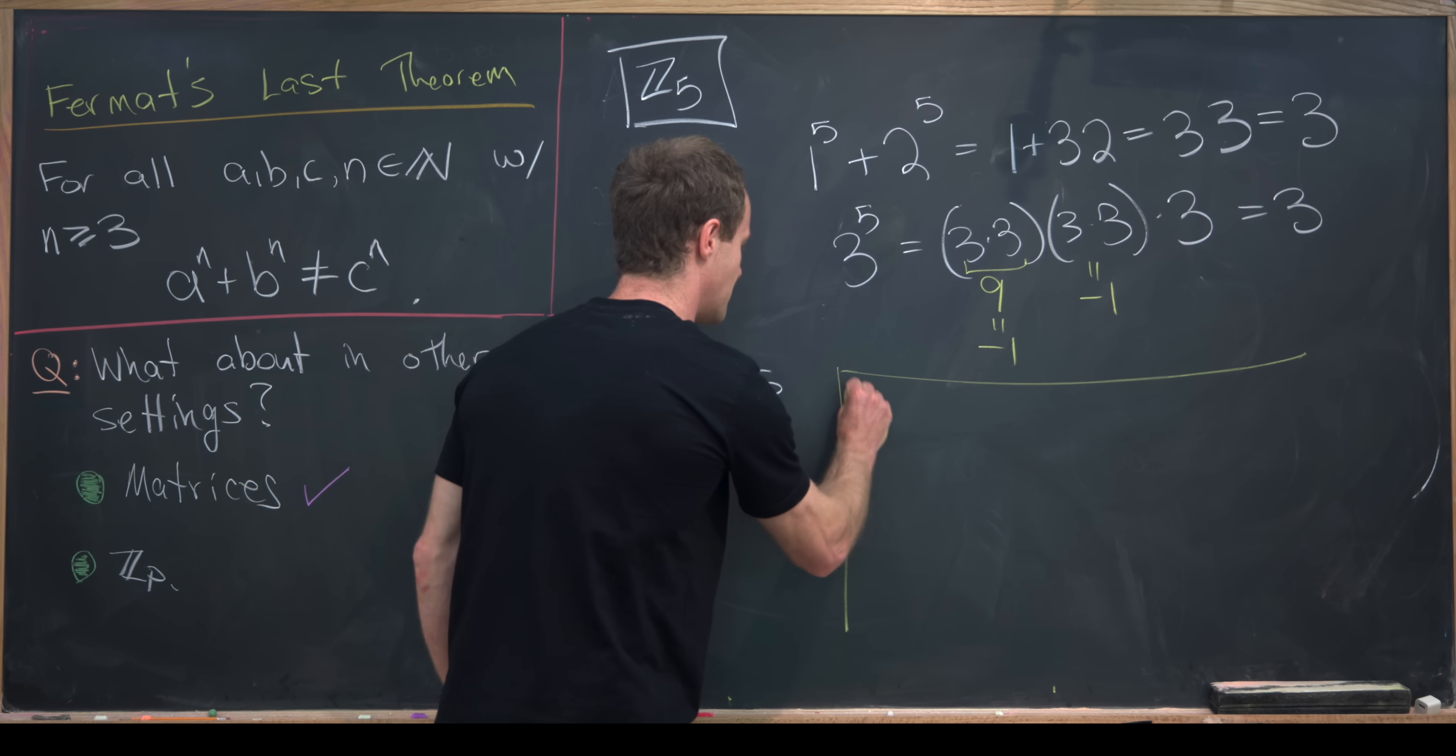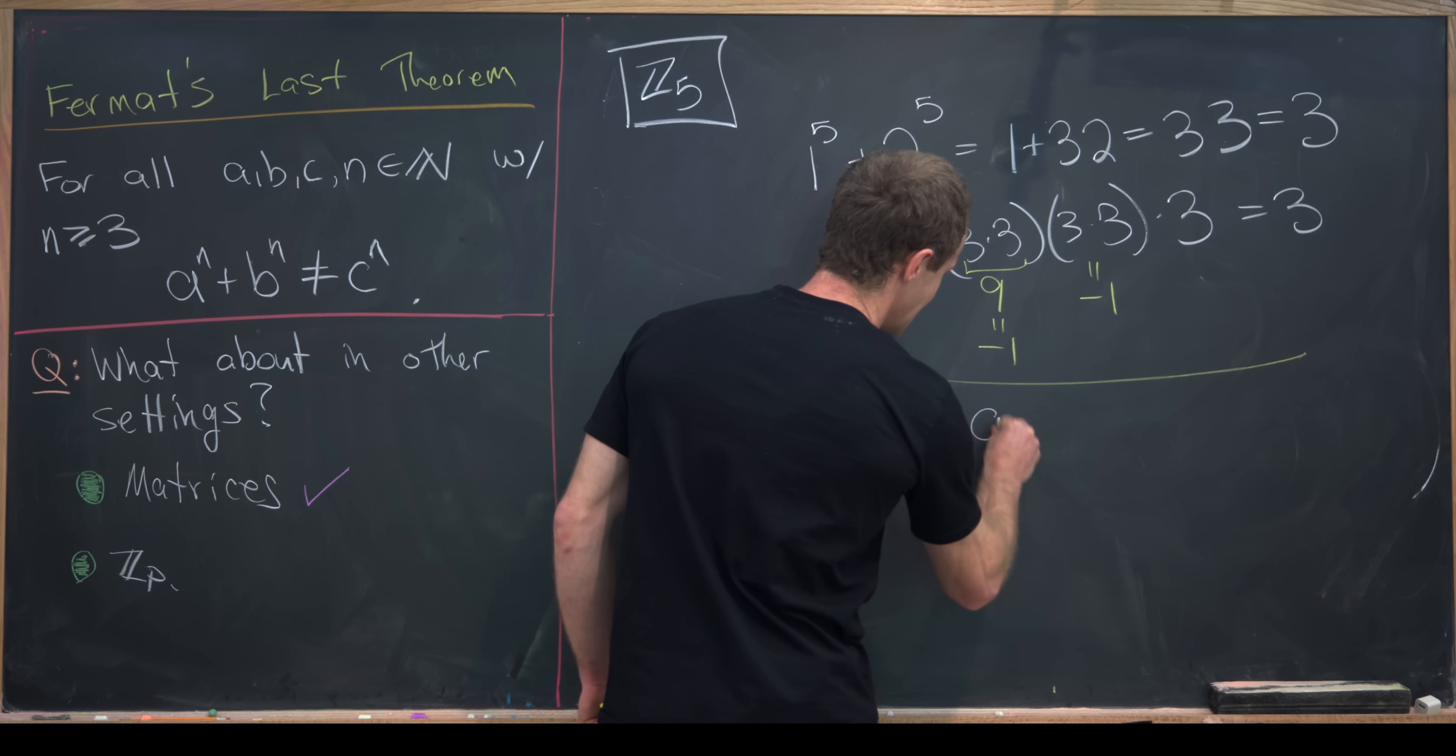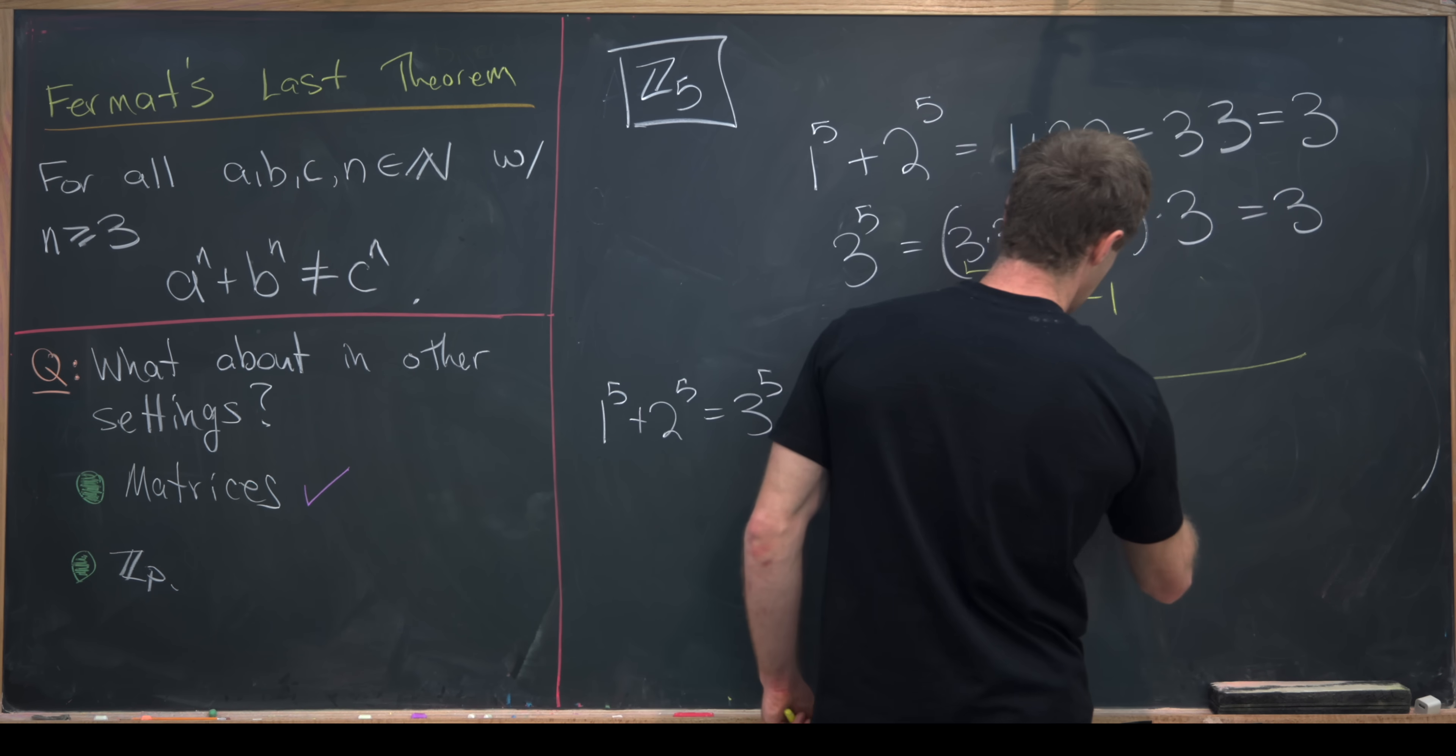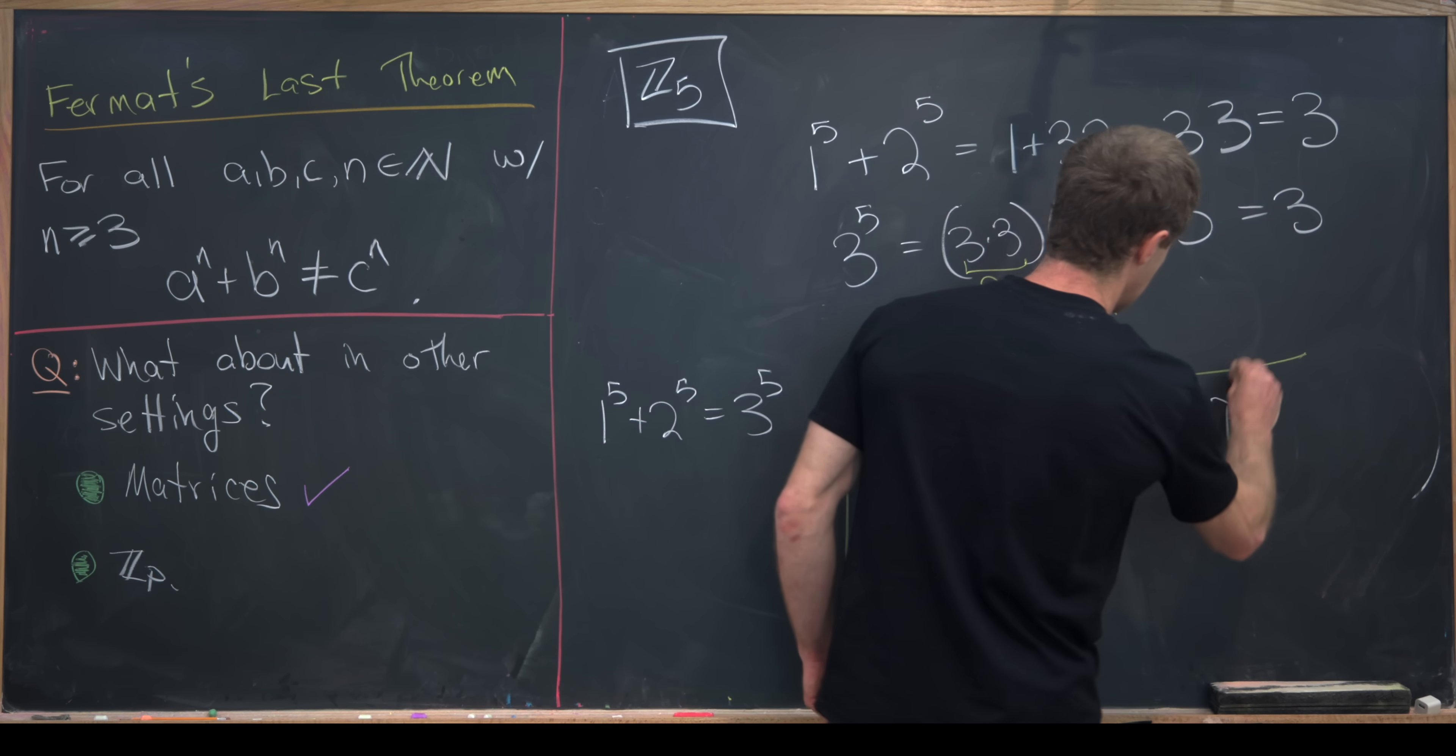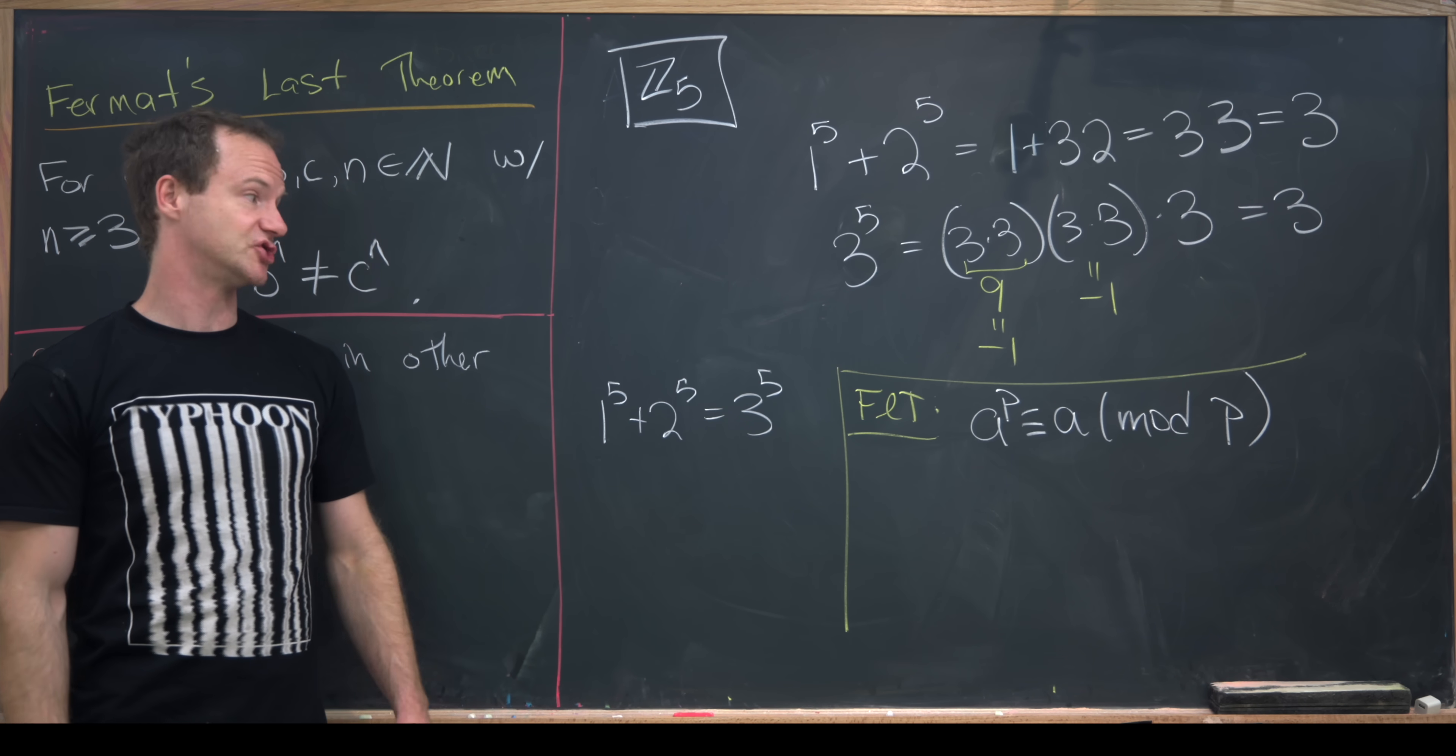And that's because of Fermat's Little Theorem, which says that A to the P is congruent to A mod P, and that's going to be for any natural number or really any integer A.